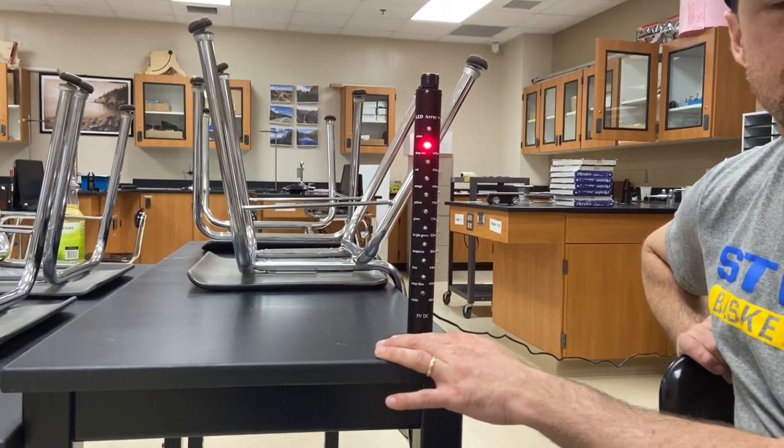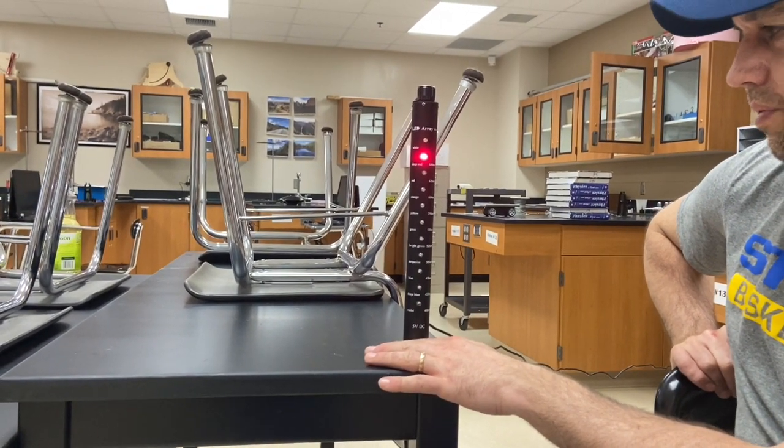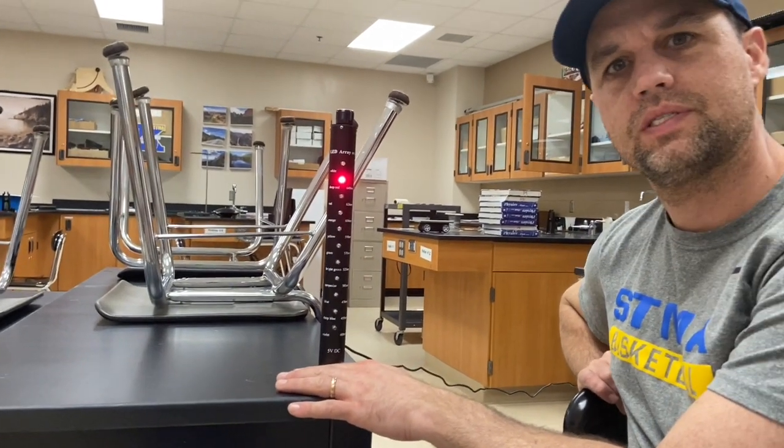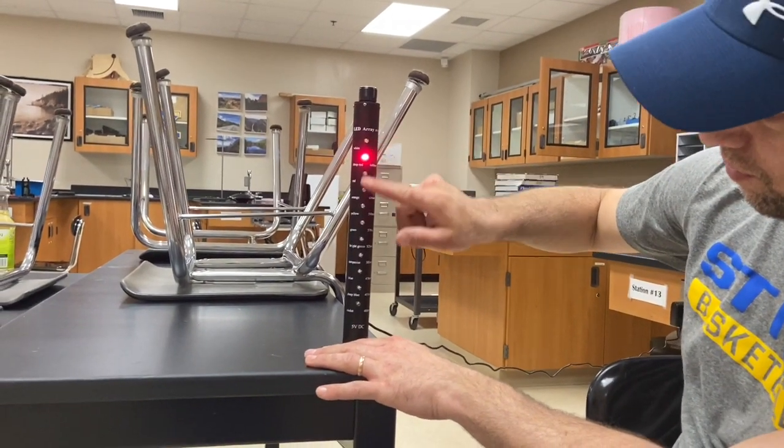Radio is the name for the longest wavelength of light. Then after you go through radio, you get to microwaves. Then infrared is just before red. Then you have your ROYGBIV.